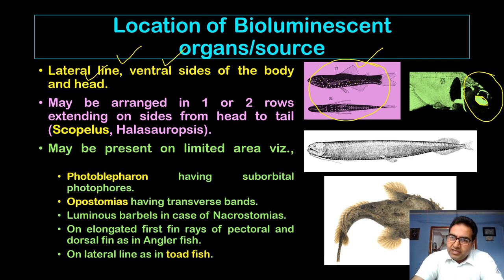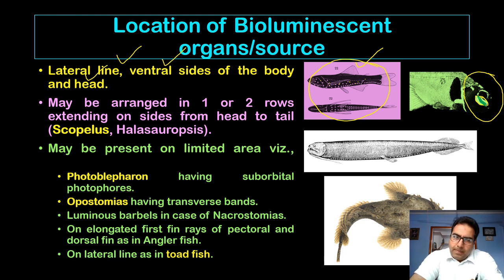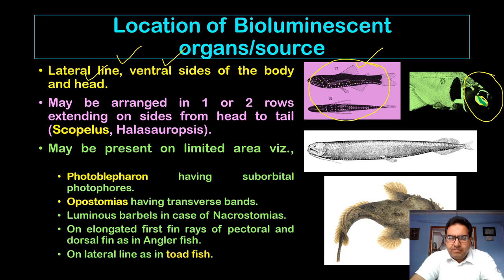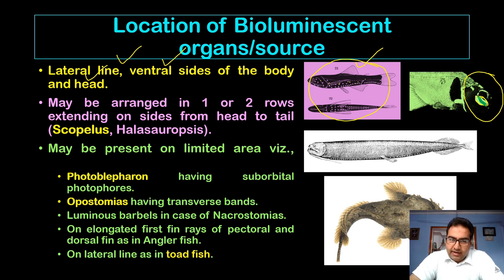In Photoblepharon, the luminescent organ is present in a limited area — just below the eye. Opostomias has transverse bands of light. Neostomias has luminous barbels. In some fishes like the anglerfish, bioluminescence is found in an elongated first fin ray of the pectoral and dorsal fin. It can also be seen on the lateral line in the case of the toadfish.